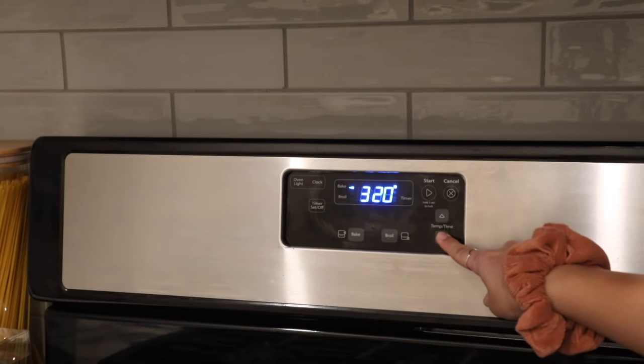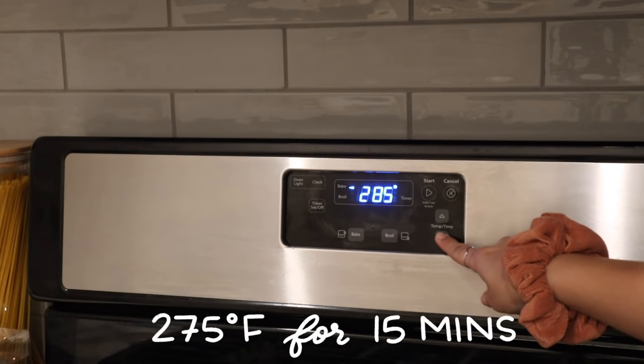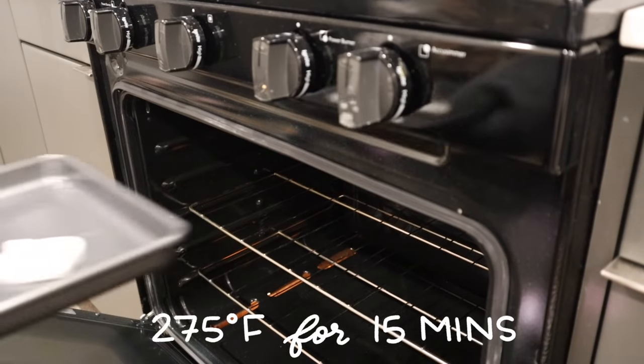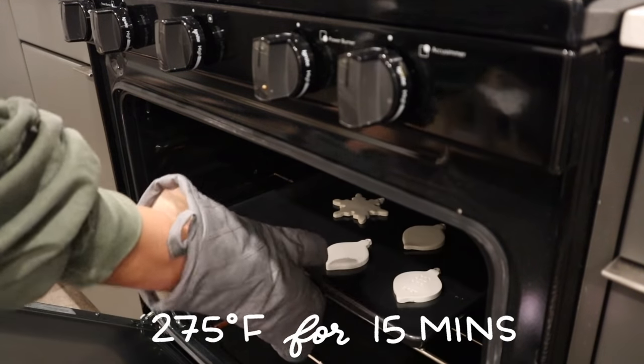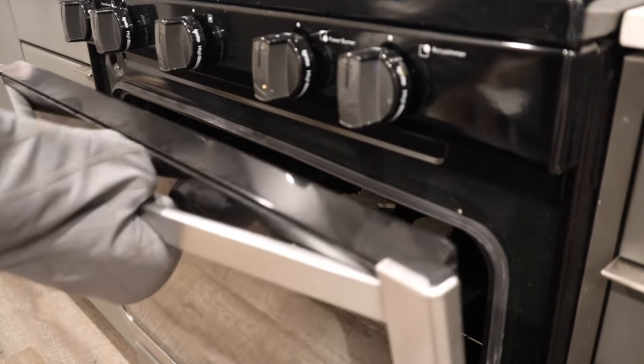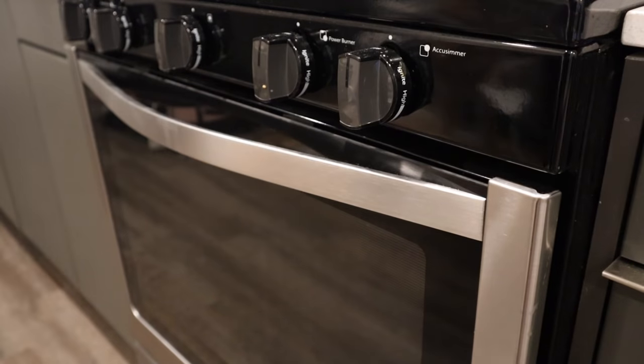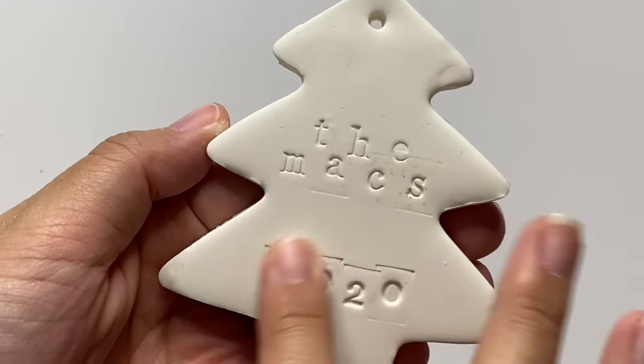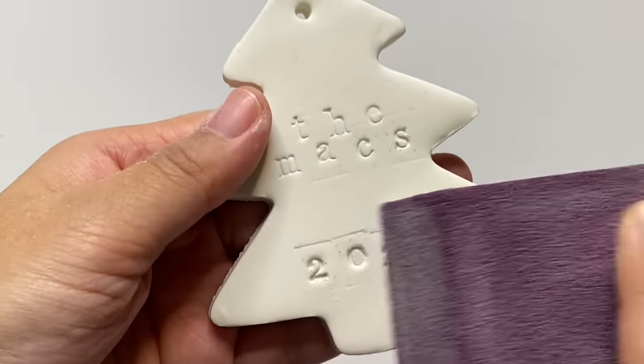All right, so all my ornaments are ready to go. I'm just going to pop them into the oven according to the directions. This one in particular bakes at 275 degrees Fahrenheit for 15 minutes for every quarter inch of thickness, so I just left it in for 15 minutes and then I took them out to cool down.